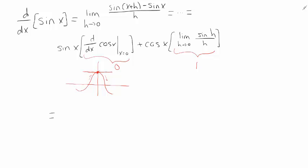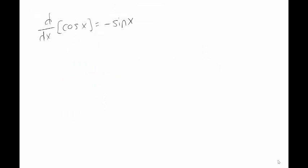So this derivative is sine of zero times zero, which is zero, plus cosine of x times one, which is cosine of x. So the derivative of sine is cosine. If you were so inclined, you could do a very similar calculation that would show the derivative of cosine x is minus sine x.